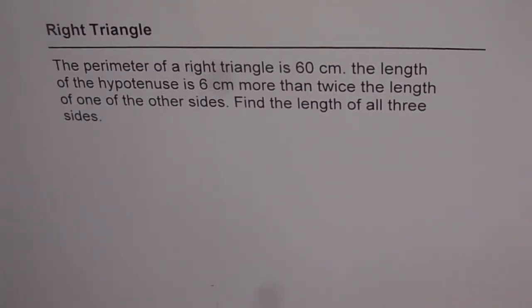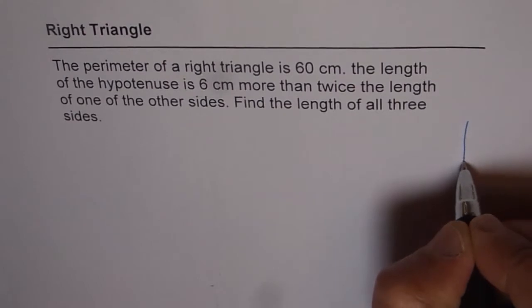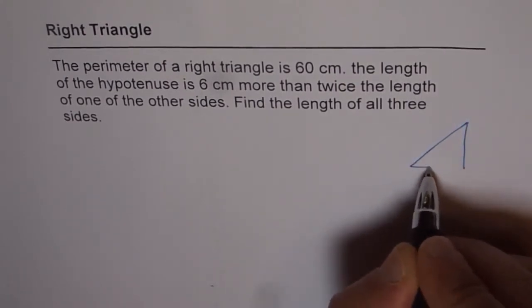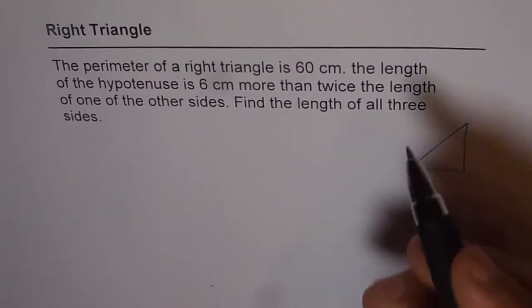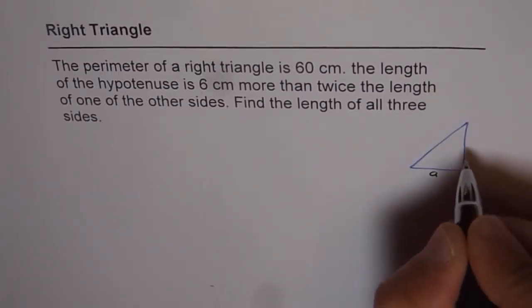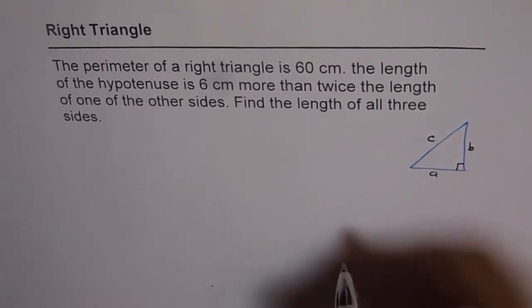Now here is how we should approach. The question is about a right triangle, so let's sketch one. A rough sketch will do, but it helps. This is a right triangle for us and let's say the sides are a, b and c, and that is the right angle.